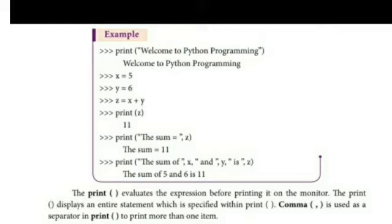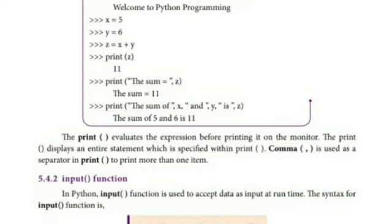Next prompt: print "The sum =", z. Within quotation, "the sum =" is given. The answer is 11. The final answer printed is "The sum = 11". Print "The sum of", x, "and", y, "is", z. Finally, the output is given: "The sum of 5 and 6 is 11".